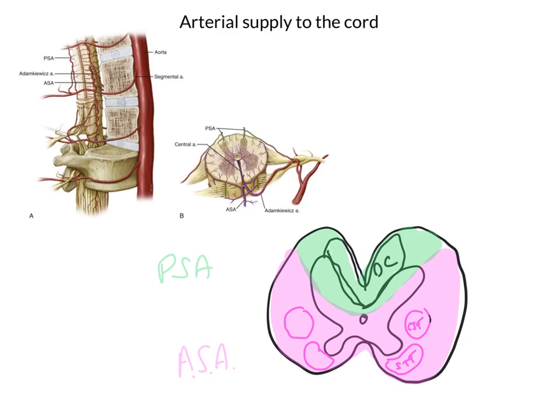So those are the very basic aspects of the spinal cord blood supply. The patterns that we see in patients with occlusion of these vessels tells us which vessel has been affected.